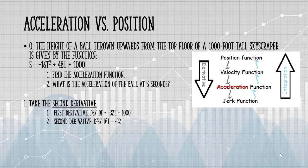The derivative of a constant is 0 again, and using our power rule, we get minus 32. The acceleration function is a constant function, minus 32, so the acceleration at 5 seconds is minus 32.